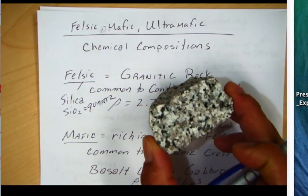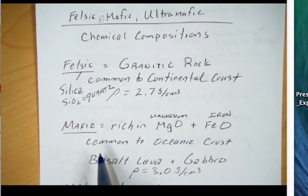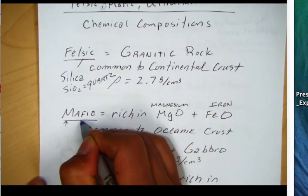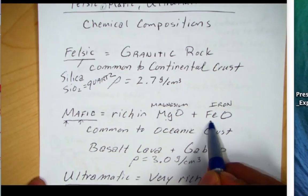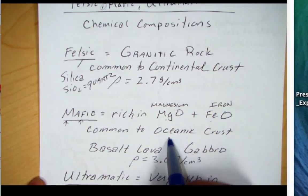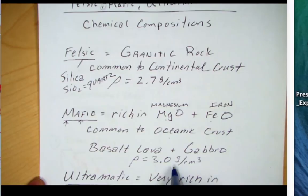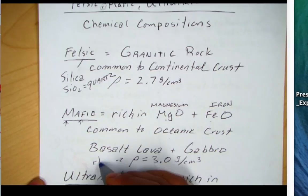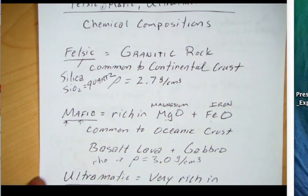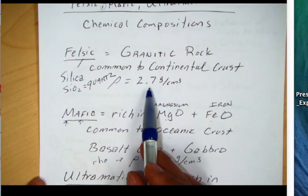The next group are the mafic rocks. Think of the M and F here for magnesium and iron — so these rocks are rich in magnesium and iron, and they're common to the oceanic crust. They're going to be a little bit more dense at around 3 grams per centimeter cubed. The Greek letter rho (ρ) is the symbol we use for density. Note that continental crust is 2.7 grams per centimeter cubed.